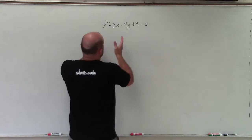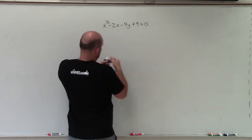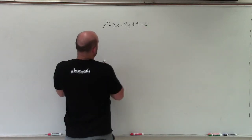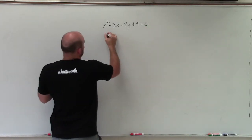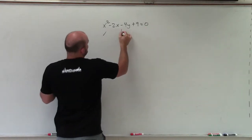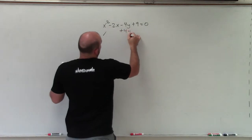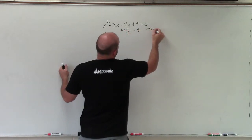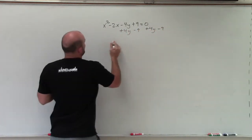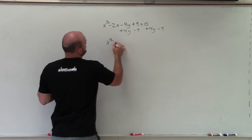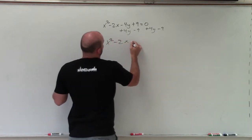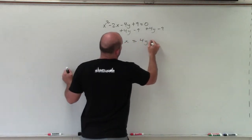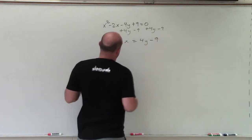To do that, I'm going to want to separate the x's and the y's. So I'm going to get the y and my constant over to the right side. By doing that, I'll just add 4y and subtract 9 on both sides. So now I have x squared minus 2x is equal to 4y minus 9.